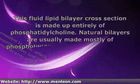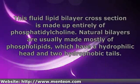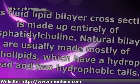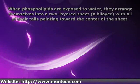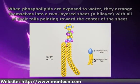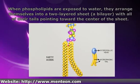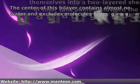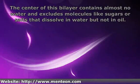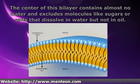This fluid lipid bilayer cross-section is made up entirely of phosphatidylcholine. Natural bilayers are usually made mostly of phospholipids, which have a hydrophilic head and two hydrophobic tails. When phospholipids are exposed to water, they arrange themselves into a two-layered sheet — a bilayer — with all of their tails pointing toward the center of the sheet. The center of this bilayer contains almost no water and excludes molecules like sugars or salts that dissolve in water but not in oil.